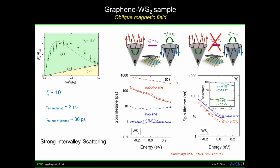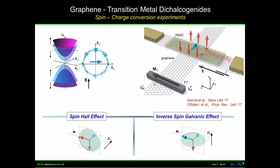Now I want to move to the second part of my talk. There is another beautiful class of experiments you can carry out in these bilayer structures: spin-to-charge conversion. On top of this out-of-plane spin texture, around these cones we have a winding in-plane spin component, which causes effects like the spin galvanic effect.